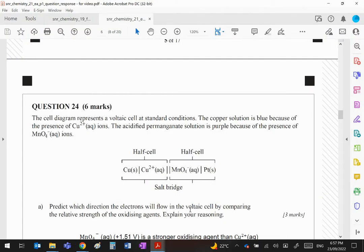Okay, question 24. A voltaic cell with copper/copper 2 plus as one half cell and manganate as the other half cell. You'll notice platinum is needed because there is no metal there. It should in fact have Mn2+ there as well.